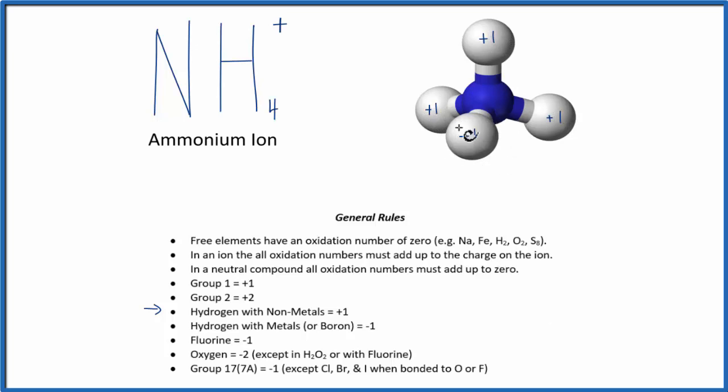Using this information about the hydrogens and the overall charge on the ammonium ion, we can figure out the oxidation number on nitrogen. You might think of it like this: we have four, so four plus something is going to give us this plus charge, this +1.